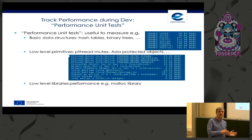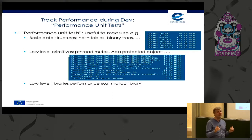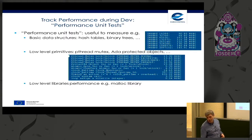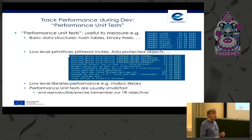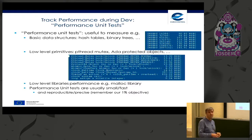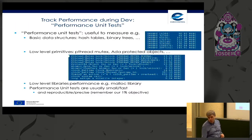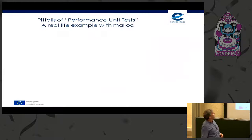We can also use performance unit tests to evaluate and measure performance of low-level libraries — for example, malloc. In ADA we don't use malloc directly, but with GNAT it is based on calls to the underlying malloc library. Performance unit tests have many advantages: they are usually small, fast, and reproducible and precise — remember our one-percent objective.